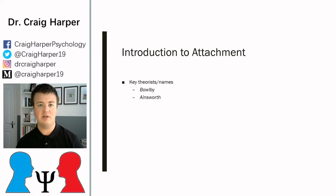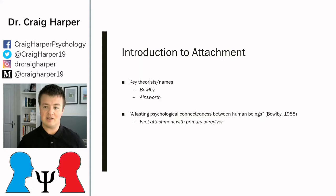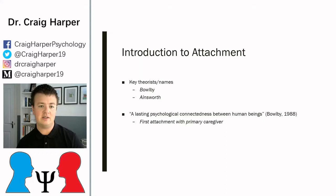We're going to try to apply attachment theory to understanding why people might be involved in crime. If we're going to very briefly define what attachment is, it's a lasting psychological connectedness between human beings. That could typically be between parents and children, but it could also be between partners, siblings, or friends.